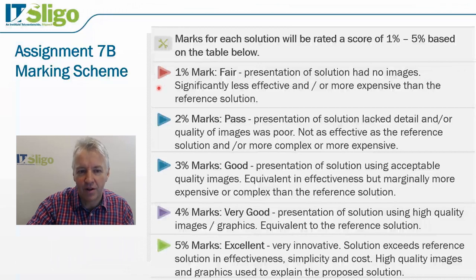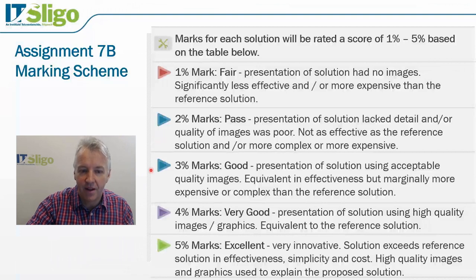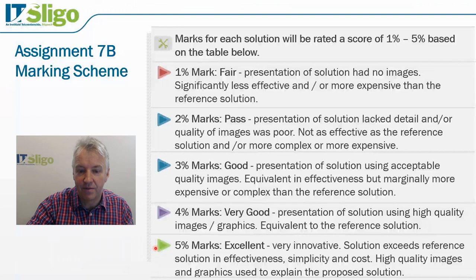If they just put in some text with no images and the quality is poor, give it a one out of five. If it met the pass mark but there was a lack of detail, poor images, and it's less effective, more complex, or more expensive than the reference solution, give it a two. Three out of five means good and equivalent in effectiveness but marginally more expensive or complex. A four or five means the solution is better than the reference — very innovative, exceeding it in effectiveness, simplicity, and cost, with high quality graphics and images.